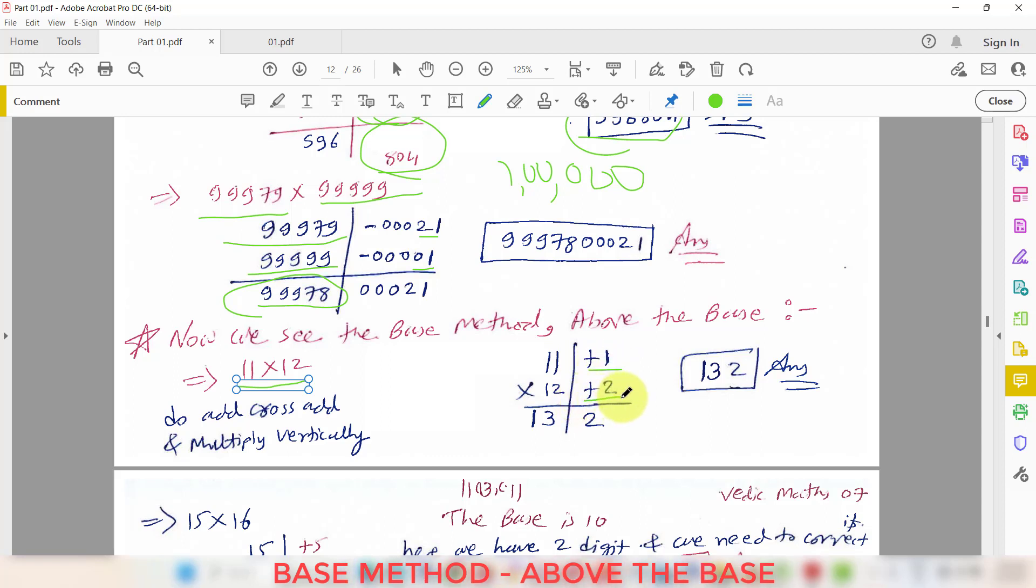Similarly 101 times 101. Here we are taking the base as 100. So it has two zeros, right? So our answer should be in 2 digits. So 101 will be excess of 100 by how much? 1. So 101 plus 1, that is 102 and then after 1 into 1 that is 01. So we can write 102 and then 01. This is our final answer.